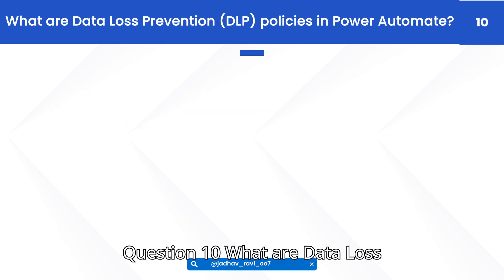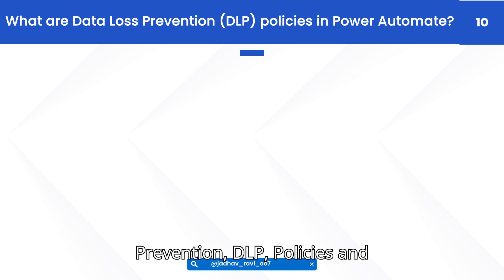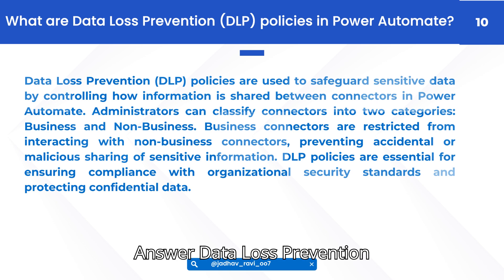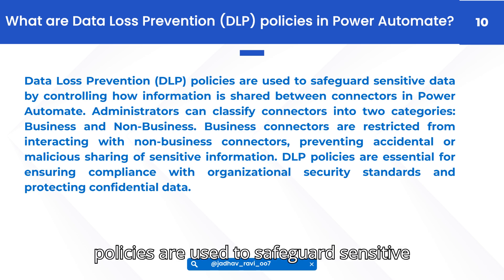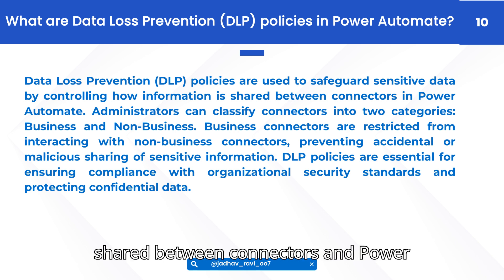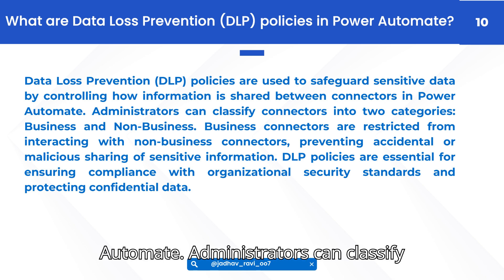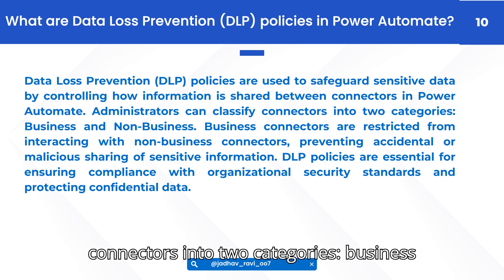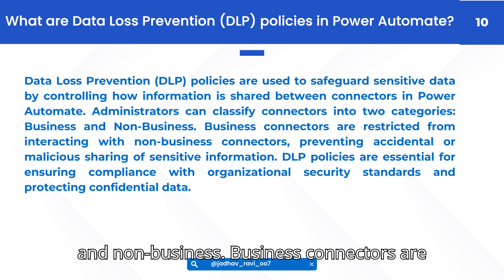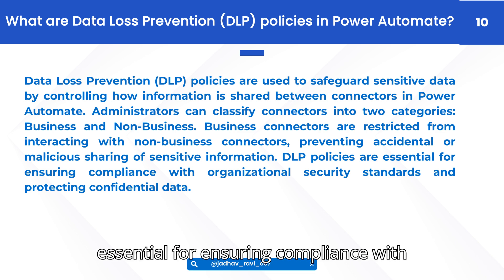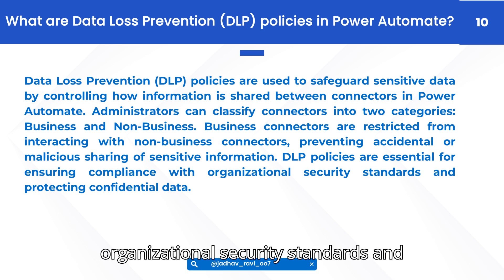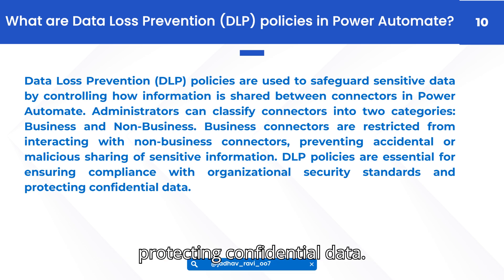Question 10: What are data loss prevention (DLP) policies in Power Automate? Answer: DLP policies are used to safeguard sensitive data by controlling how information is shared between connectors in Power Automate. Administrators can classify connectors into two categories: business and non-business. Business connectors are restricted from interacting with non-business connectors, preventing accidental or malicious sharing of sensitive information. DLP policies are essential for ensuring compliance with organizational security standards and protecting confidential data.